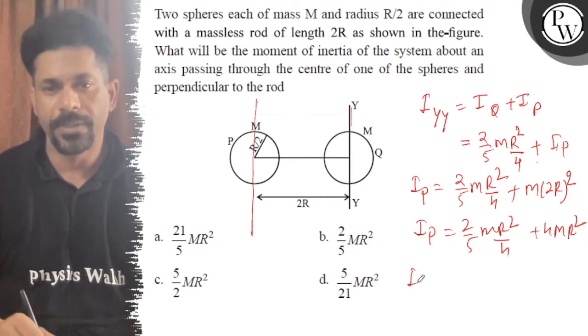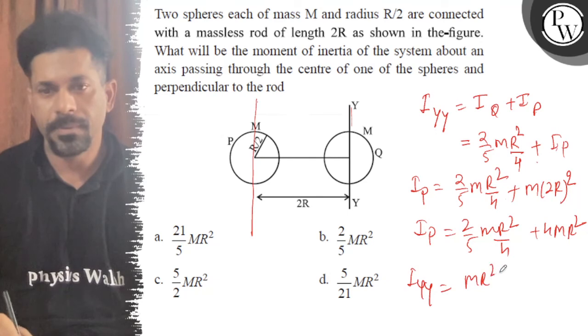If we put this together, Iyy will be double of this, which is MR²/5 plus 4MR².